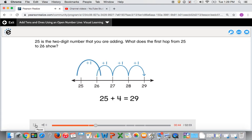What does the first hop from 25 to 26 show? It shows that you counted on one more from 25.